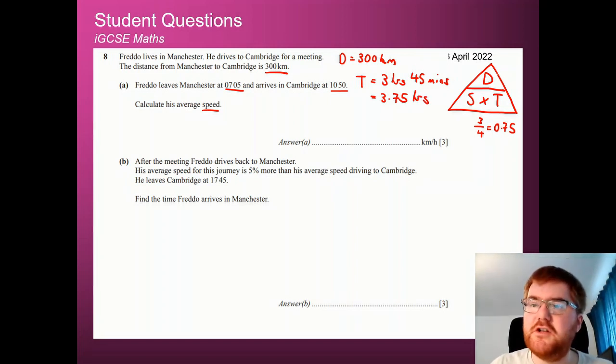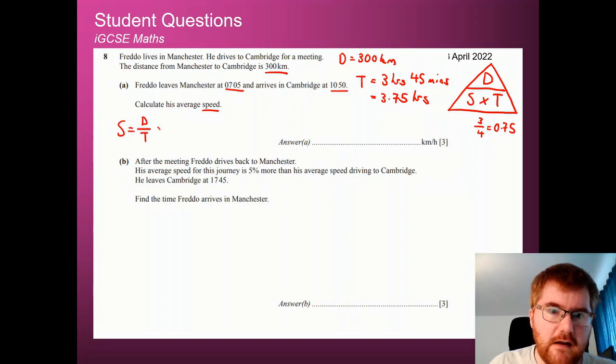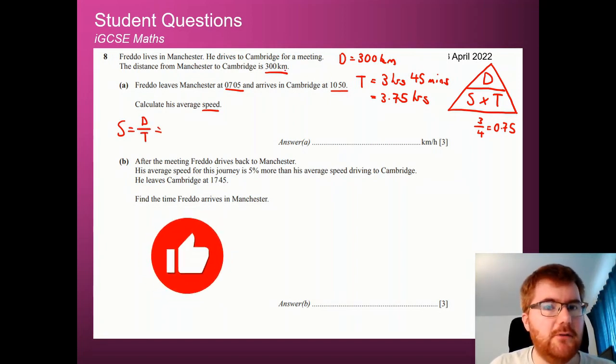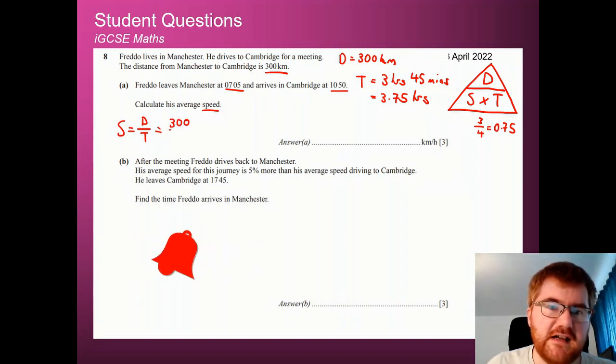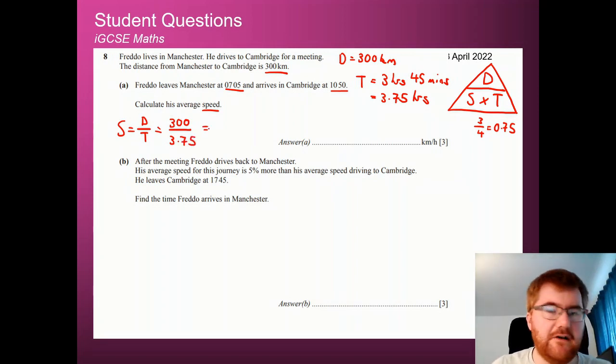Once we have that, we can use the formula triangle. So we're looking for the speed, so we're going to do D divided by T. So S is equal to D over T. We've checked the units are the same, kilometres and hours. So now we can do 300 for the distance, divided by the time taken, which is 3.75. And if you pop that into your calculator, you will get the answer of 80. So we can pop in 80 as our final answer.